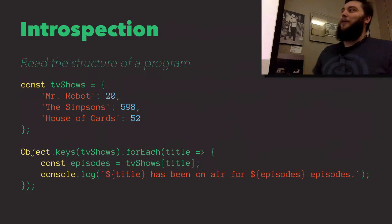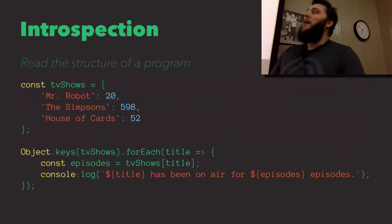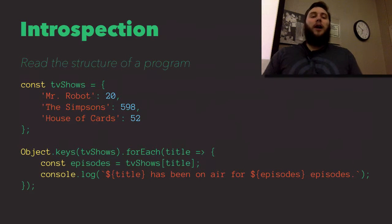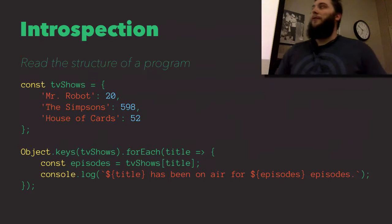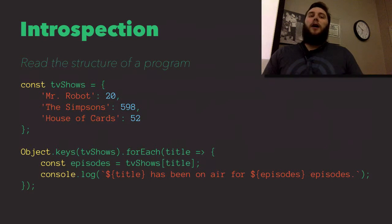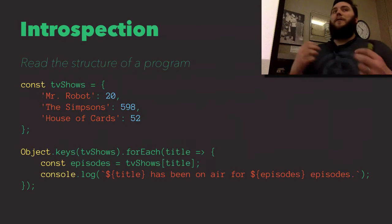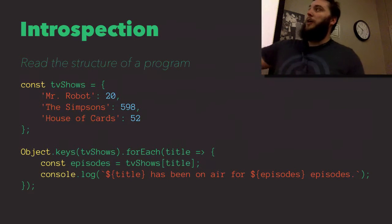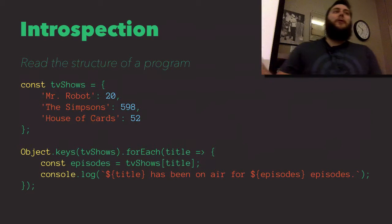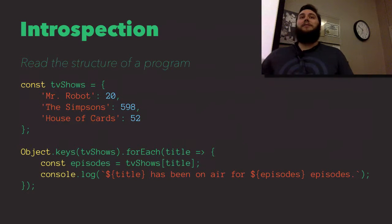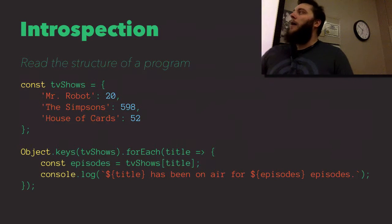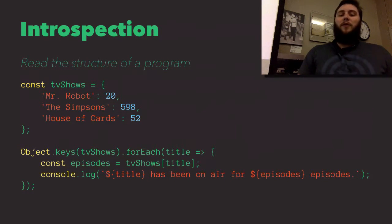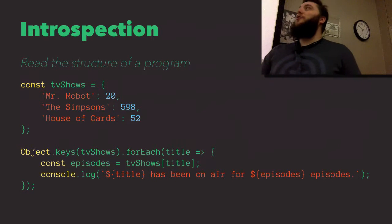Let's look at some ES5 code you might be using. An example of introspection would be the object methods. If you use Object.keys, Object.values, Object.entries, and several other properties — those are metaprogramming you're doing. You are taking the structure of your program, in this case an object called TV shows, and getting all of the properties off of it. So you're writing code to inspect your code and get properties off of it, then looping over them and logging them out. That's a very simple use of introspection.